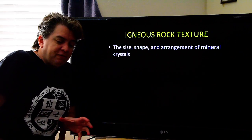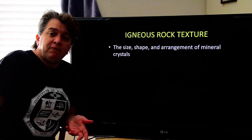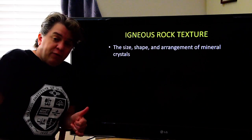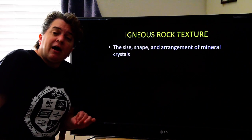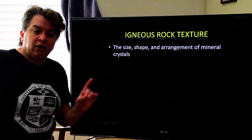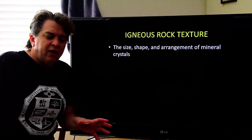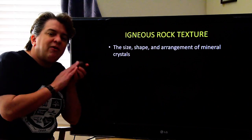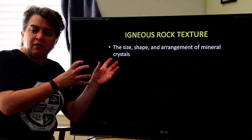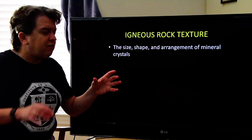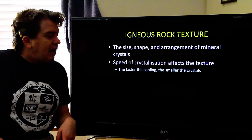When identifying igneous rocks and trying to figure out where and how they formed, one thing is the composition, which we just went over. The other thing you have to look at is the texture of the igneous rock. When we're talking about texture, we're not talking about how it feels — we're actually talking about how the minerals inside are arranged: the size, shape, and arrangement of the little minerals that make up that rock.